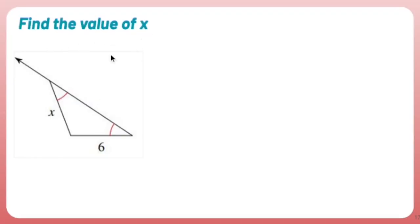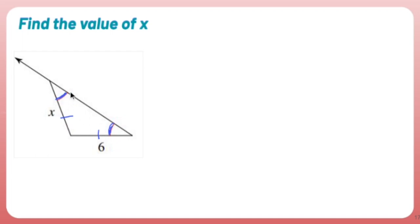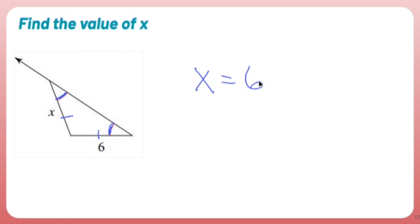Find the value of X. These two angles are the same, which means this is an isosceles triangle — the base angles are equal. When base angles are the same, their opposing sides are also the same as each other. So X equals 6. Short and sweet.